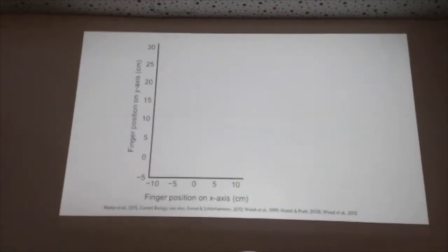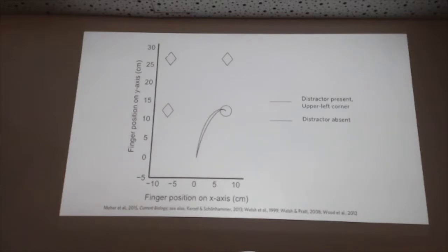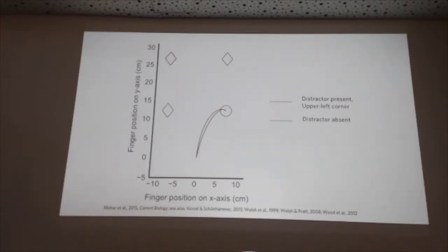We've done work using this paradigm with reaching, and we find a consistent pull on the hand toward salient distractors as well. I want to give credit — there are other people who've done very similar work, including some people in this room, on the ways salient objects can impact motor behavior.